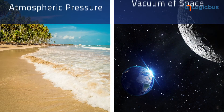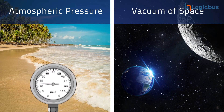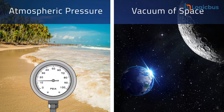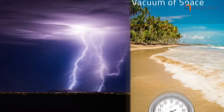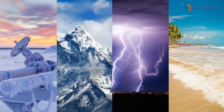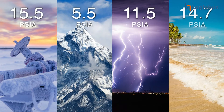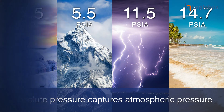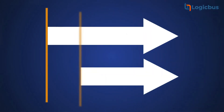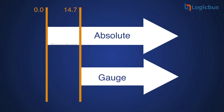On planet Earth, the standard naturally occurring pressure is 14.7 PSI at sea level, and nowhere except in outer space will atmospheric pressure ever reach zero. Depending on the altitude and weather, the resting state of an absolute pressure monitoring device will fluctuate, making it a perfect candidate for measuring weather data and other applications where atmospheric pressure is important to the calculation.